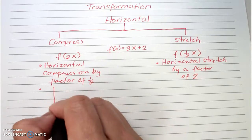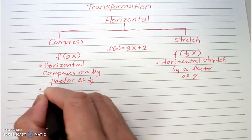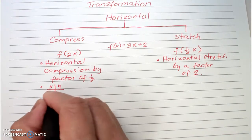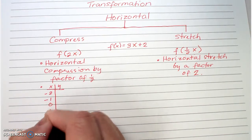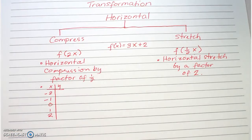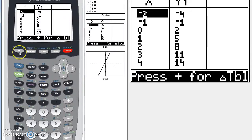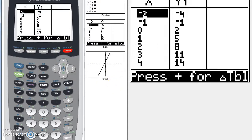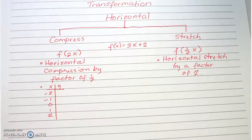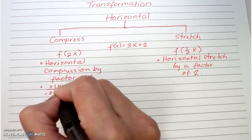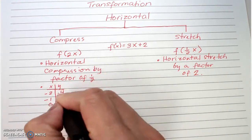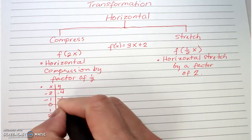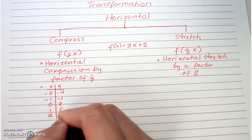Let us now look at the table. For the original function, we will maintain our domain of negative two, negative one, zero, one, and two. For convenience, we're going to plug these into y equals three x plus two. On the second graph you're going to see all your range values starting from negative four all the way up to eight.